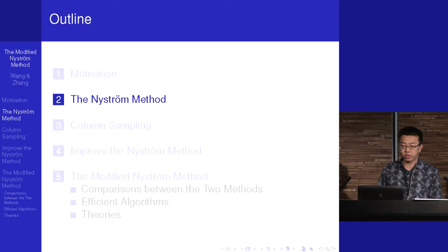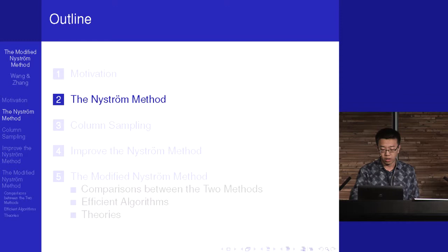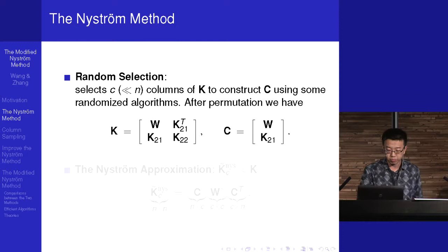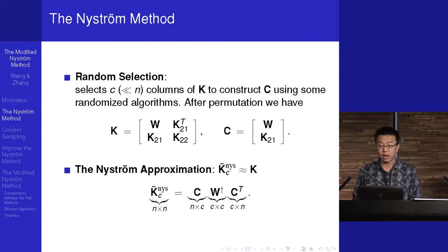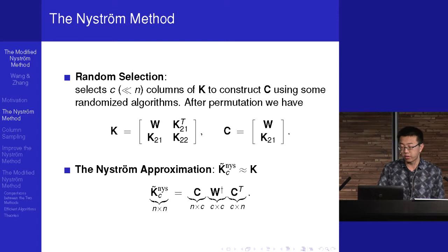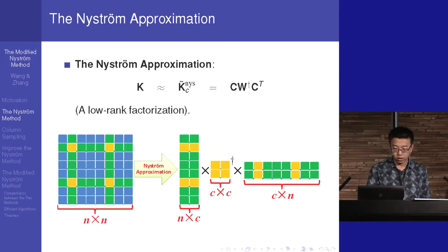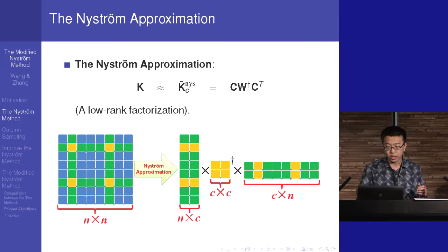Now I'll introduce the Nystrom method. It was first devised by Nystrom and introduced to the machine learning community by Williams and Seeger. Given a kernel matrix K, we sample some columns of K to construct a matrix C, and W is the corresponding block of K. After permutation, we can always partition these two matrices accordingly. Then the Nystrom approximation is C times pseudo-inverse W times transpose C. Since C is small, this is also a low-rank factorization, so it can be used to speed up kernel methods.